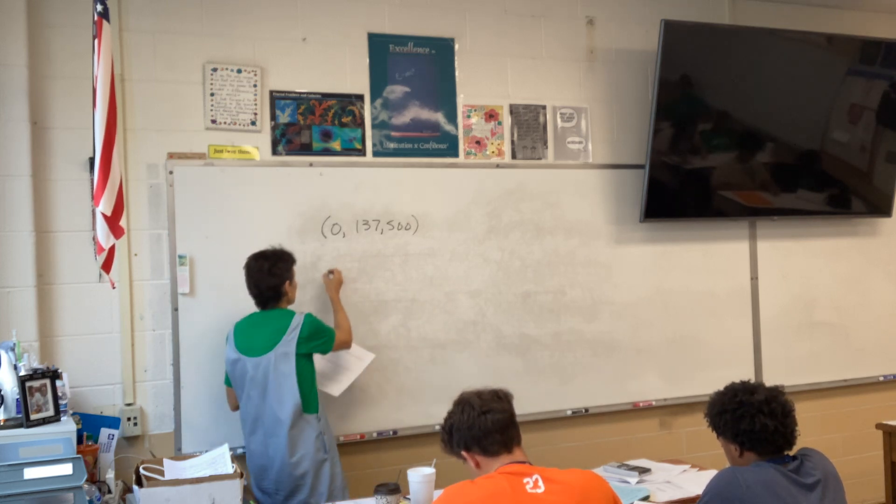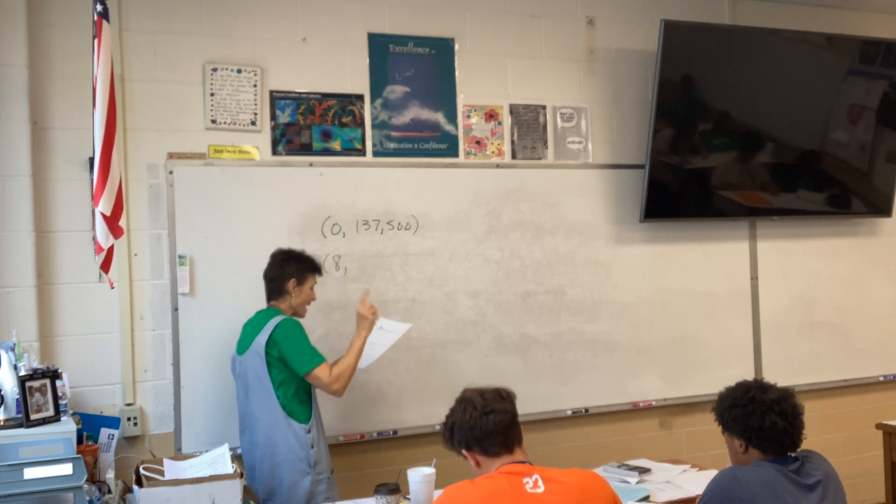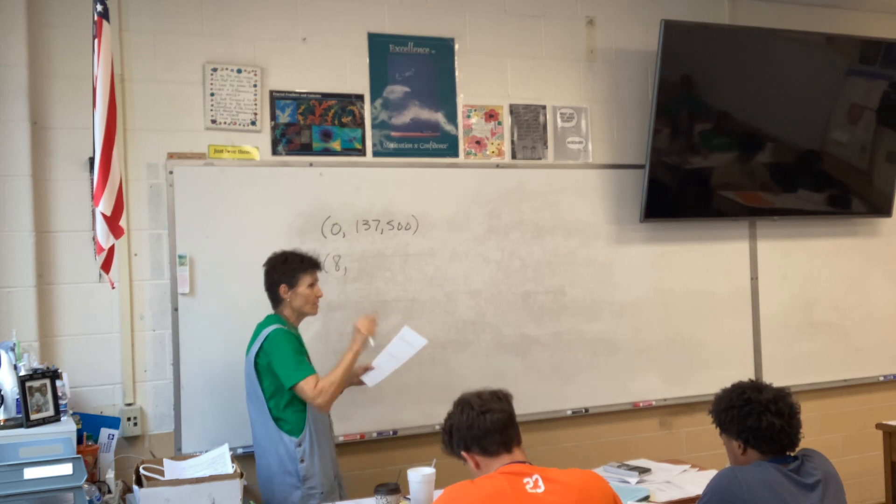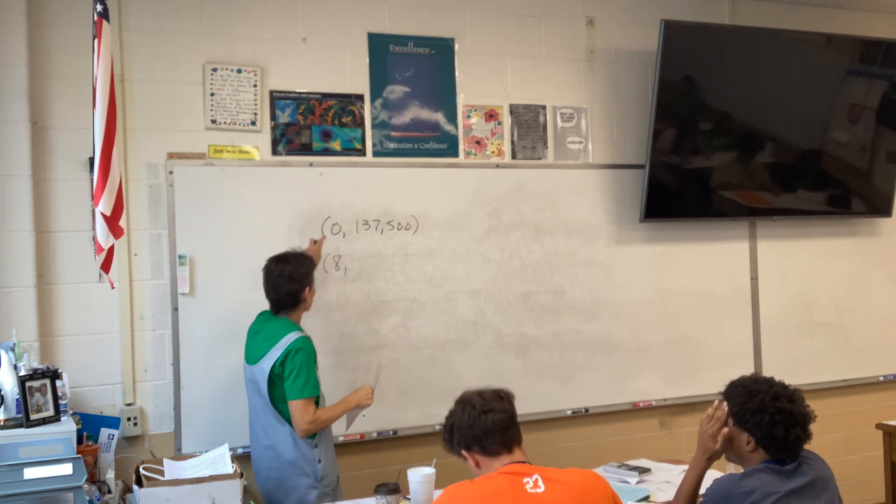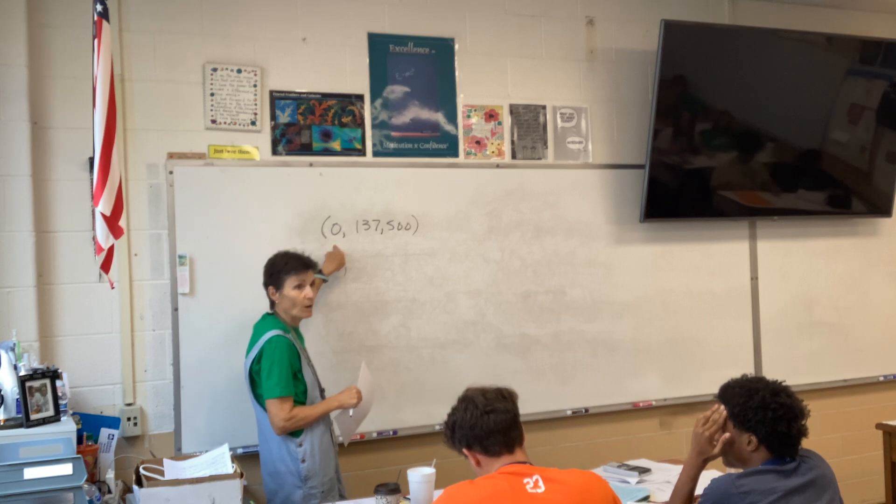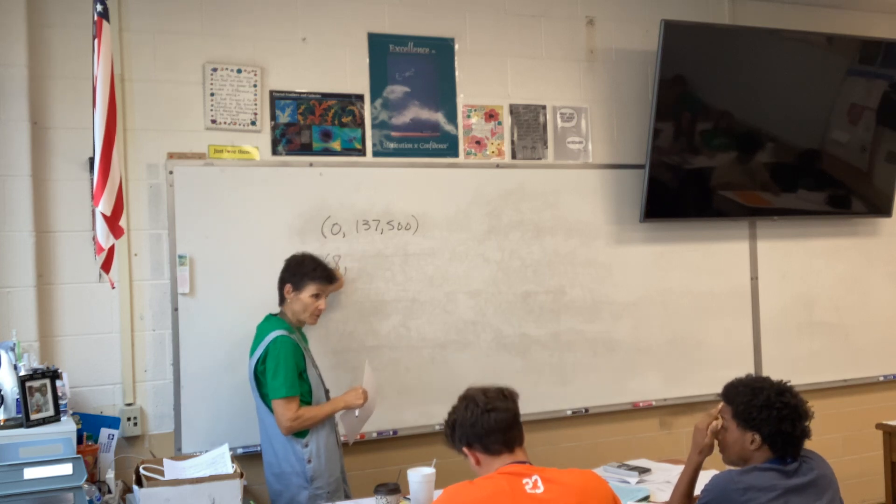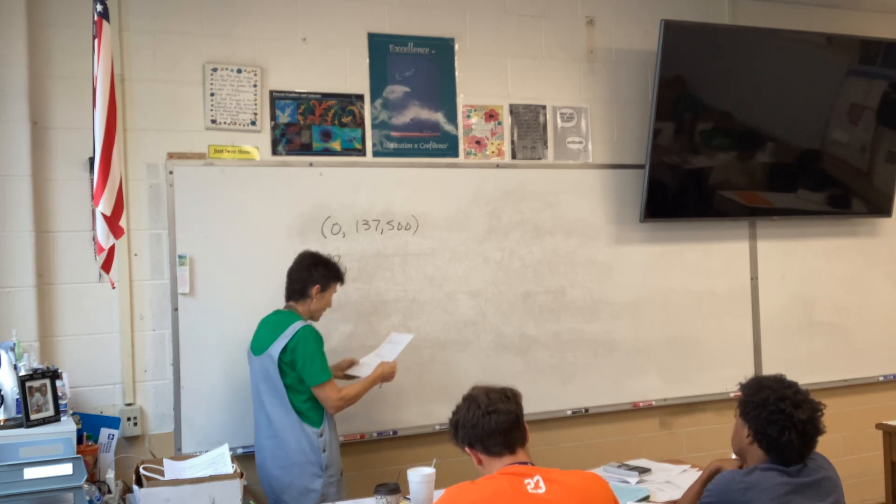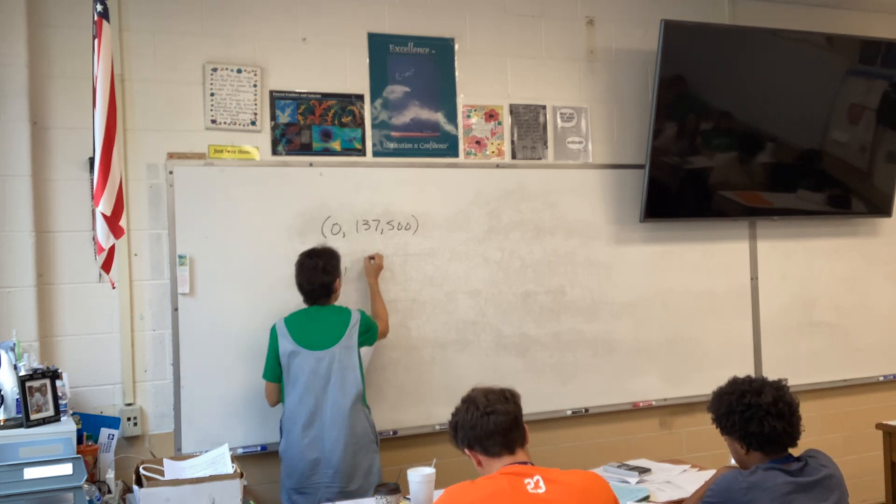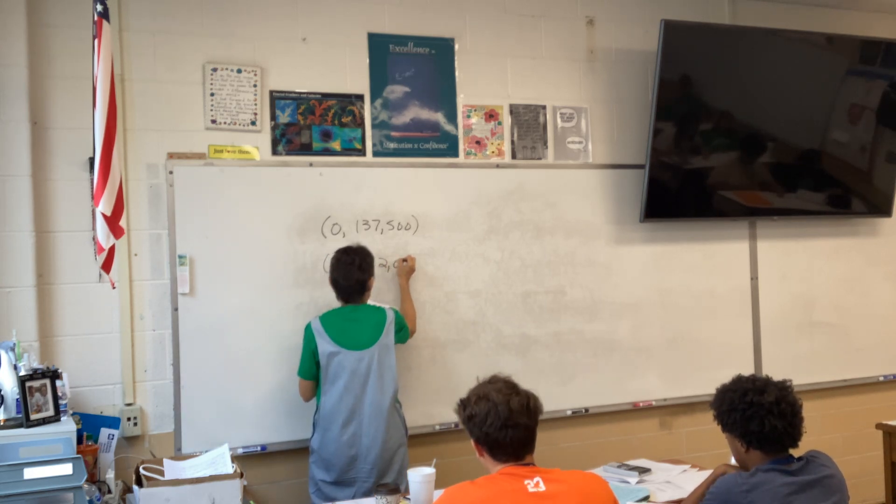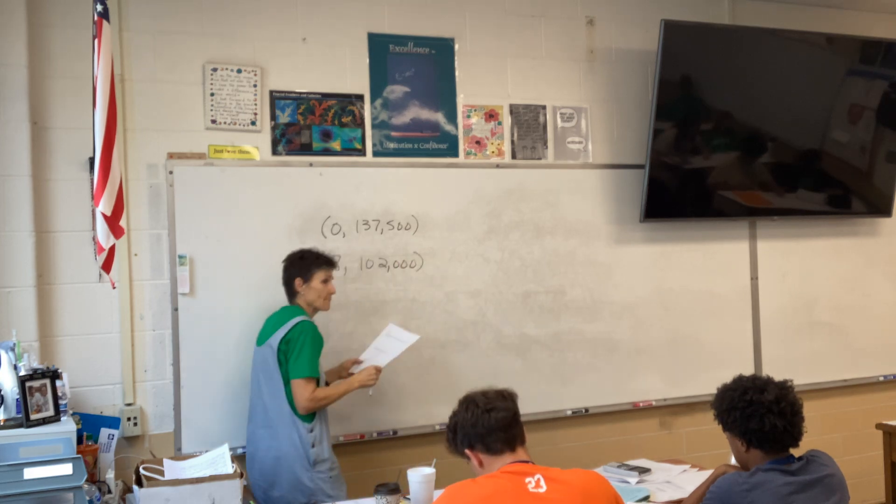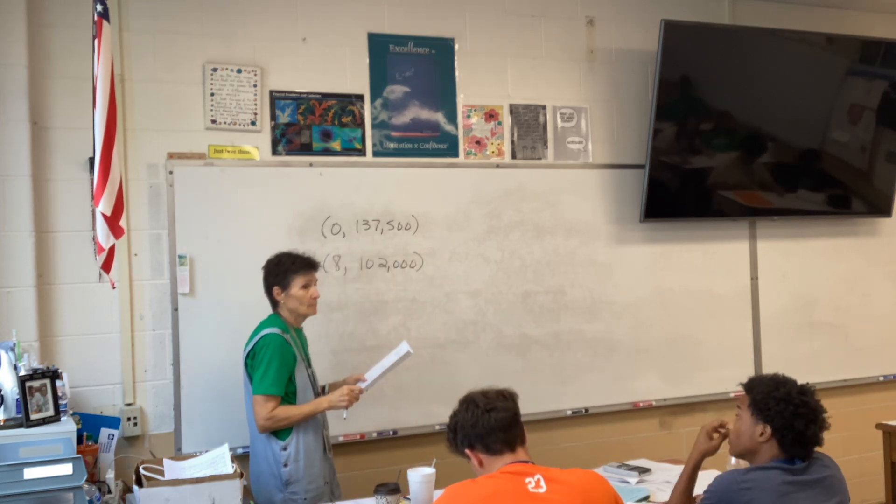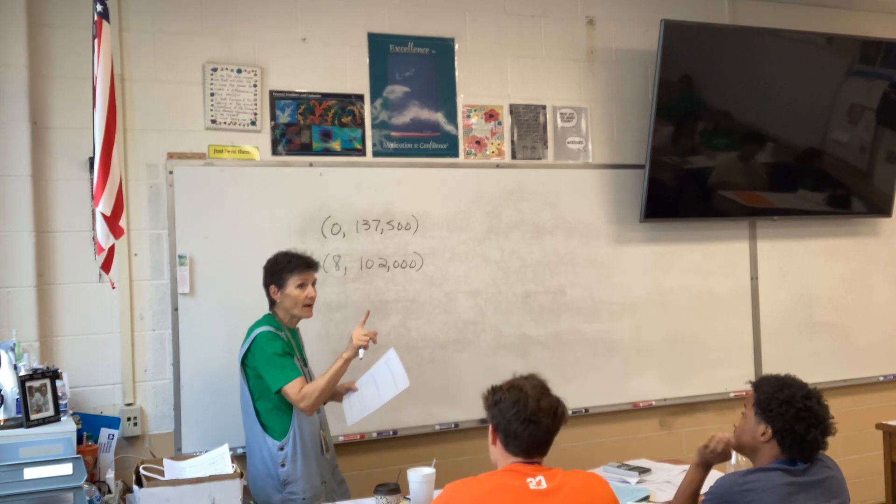So, at purchase time, the cost of the house was $137,500, right? Eight years later, remember, X is X years after purchase. So when we purchase it, X would be zero, and eight years later, X would be eight, and the value after eight years was $102,000. Everybody got that?